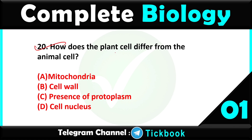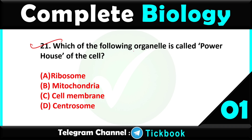Question number twenty: how does the plant cell differ from the animal cell — option number B, cell wall. Question twenty-one: which of the following organelle is called the powerhouse of the cell — option number B, mitochondria.